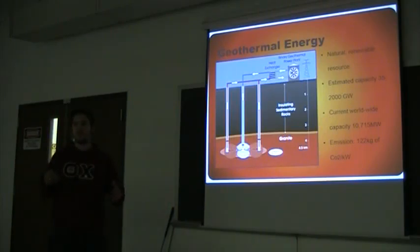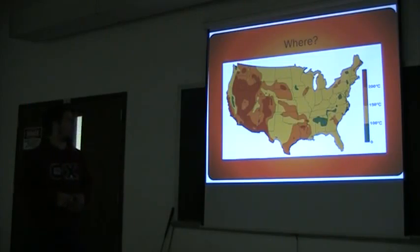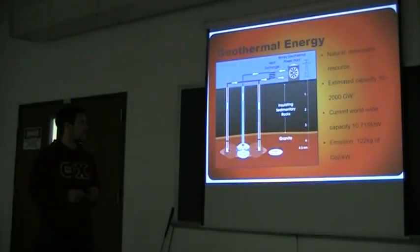This heat can range in temperature from below 200 to over 360 degrees Fahrenheit. Basically, what these power plants do is take advantage of that heat being formed underneath the surface of the earth.